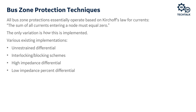We use the differential principle for bus protection, based on Kirchhoff's current law: the sum of all currents entering a node must equal zero, or current-in equals current-out. The various implementations are: the unrestrained differential, the interlocking or blocking scheme, the high impedance differential, and the low impedance percent differential. Our focus today will be on the low impedance protection, with brief coverage of the others.